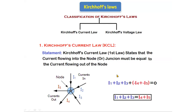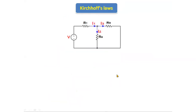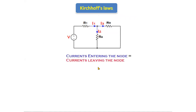From the diagram, we can write the KCL equation. Assume this is a node. Looking at this node, I1 current is entering and I2 and I3 currents are leaving from the node. Only I1 is entering, and I2 and I3 are leaving.